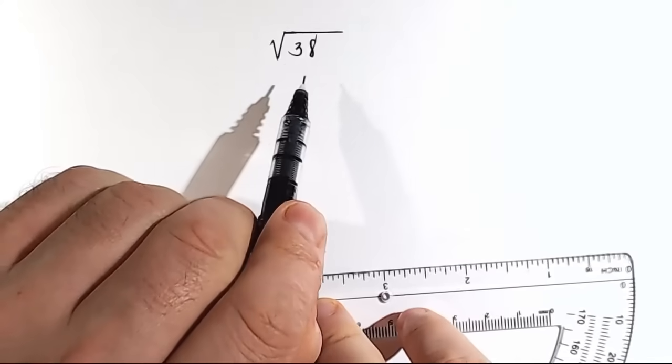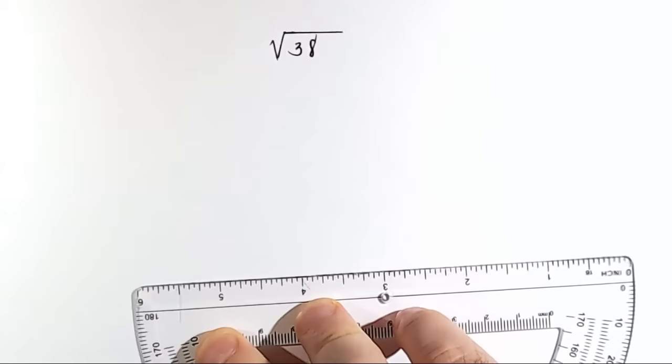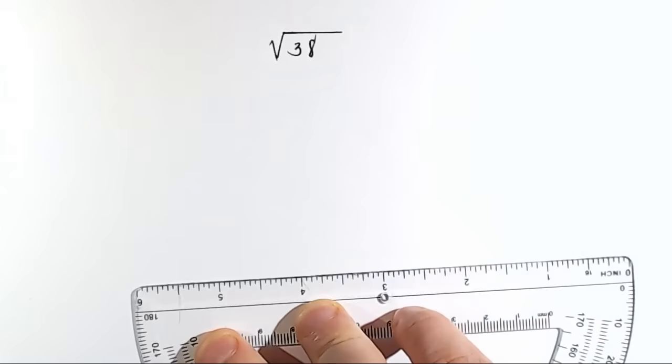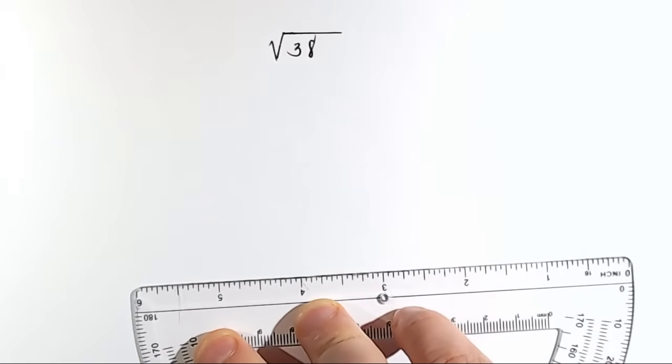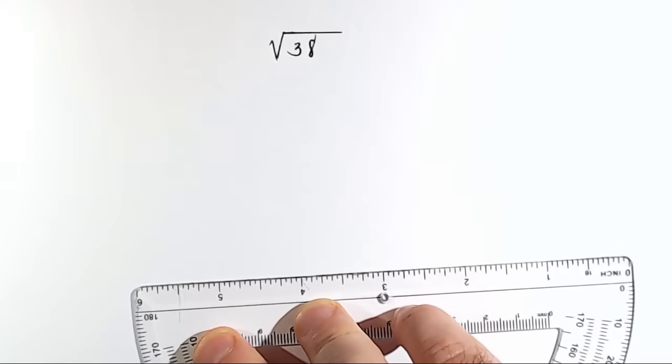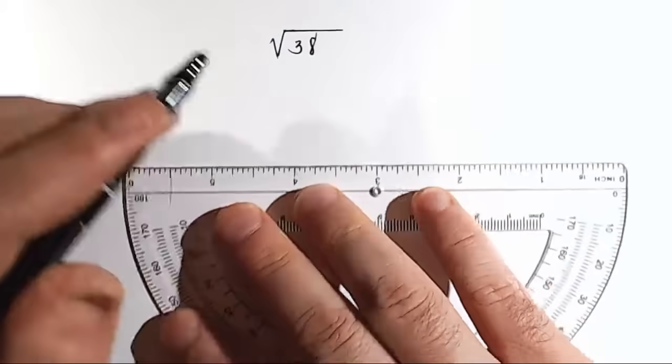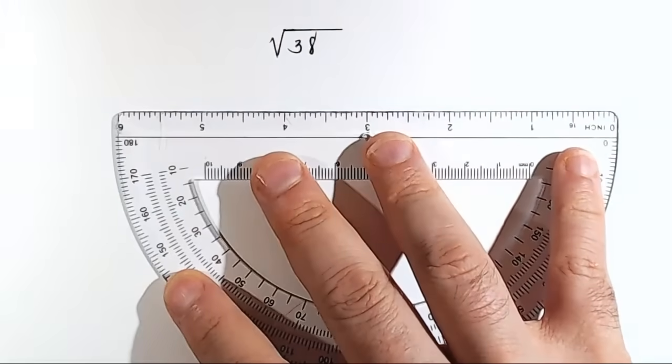Okay, the problem we're presented with is that 38 is not a perfect square. So it's not 2 times 2 is 4, 3 times 3 is 9, 4 times 4 is 16, 5 times 5 is 25, 6 times 6 is 36, 7 times 7 is 49. It's not a perfect square of any whole number. So we have to approximate it, and here's how we're going to do that.